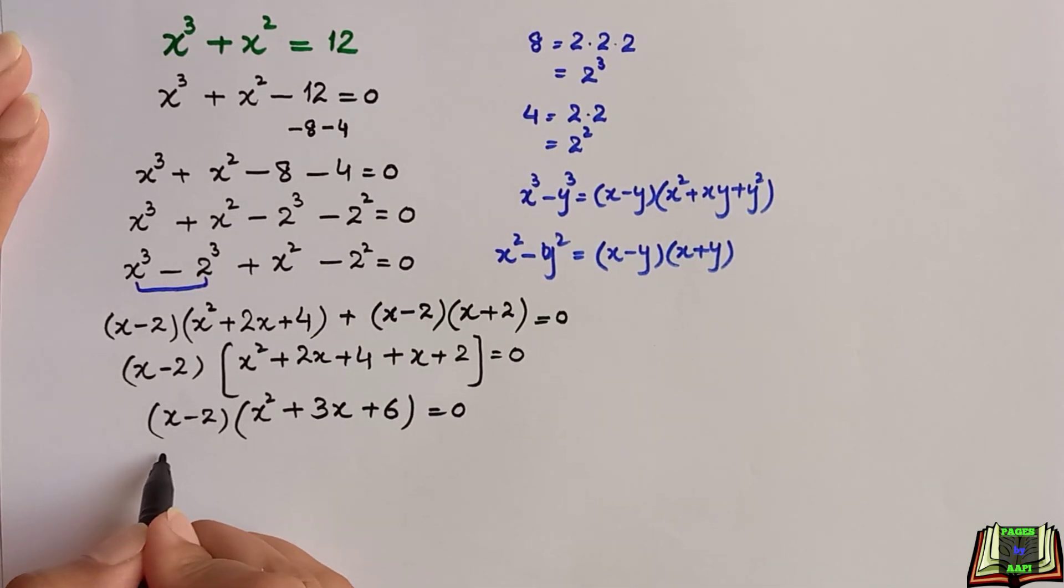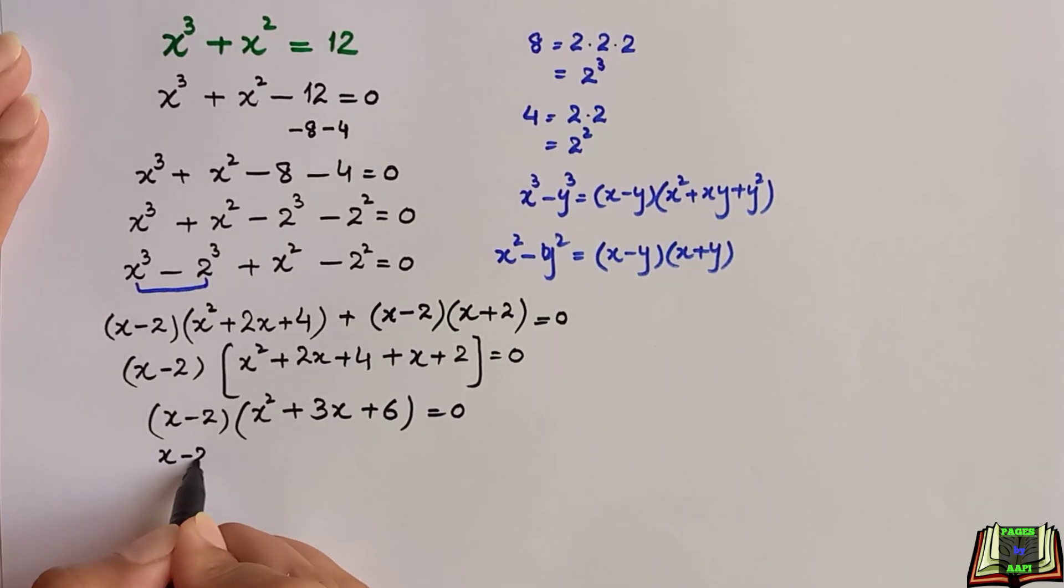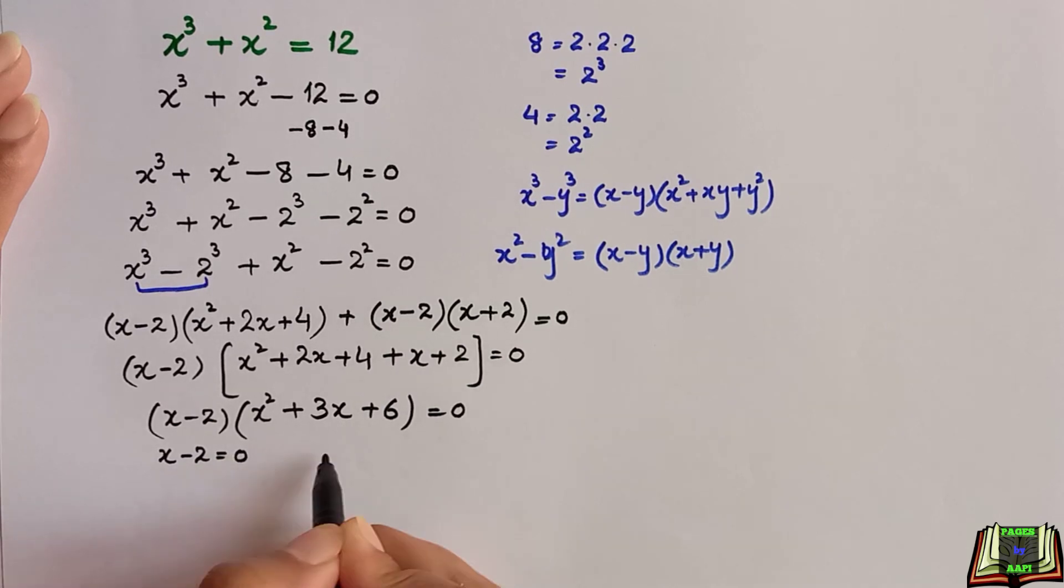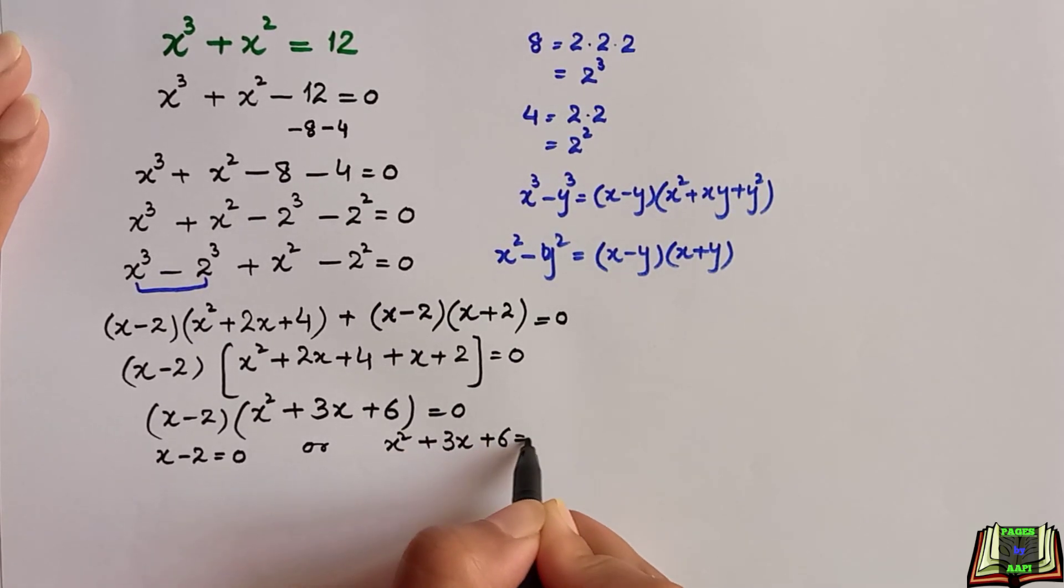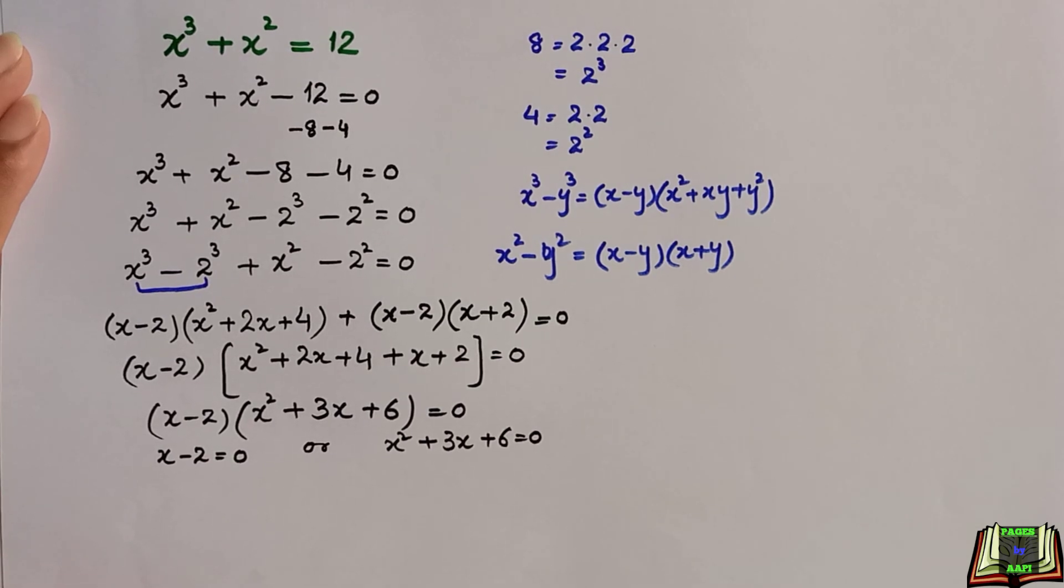Here we got two factors: x minus 2 equals 0, or x square plus 3x plus 6 equals 0. From the first one we can find the value of x by adding 2 on both sides. We have the value of x is equal to 2.